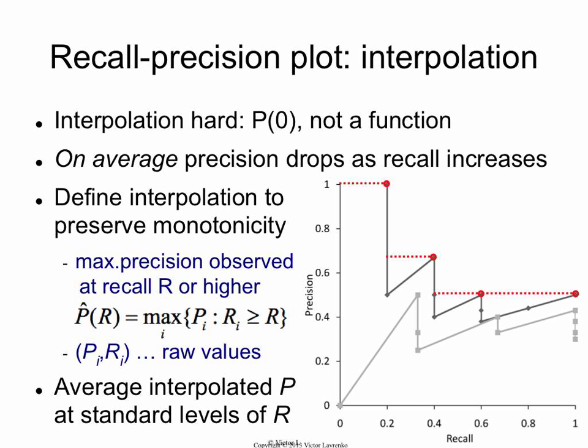So the red line is the new interpolated function for query 1. For query 2, you get something similar — anything up to a recall of 33% will have a precision of 0.5, and beyond that it takes the maximum precision value available. This is how you interpolate the points into a single function.